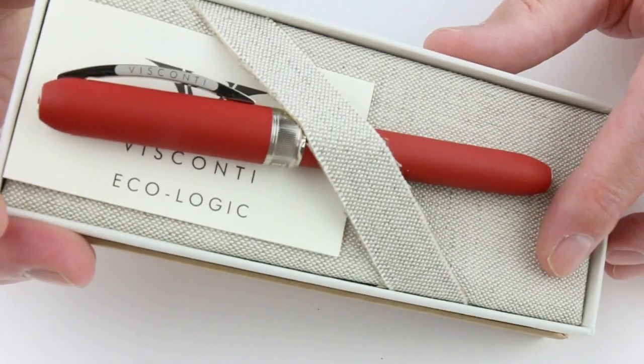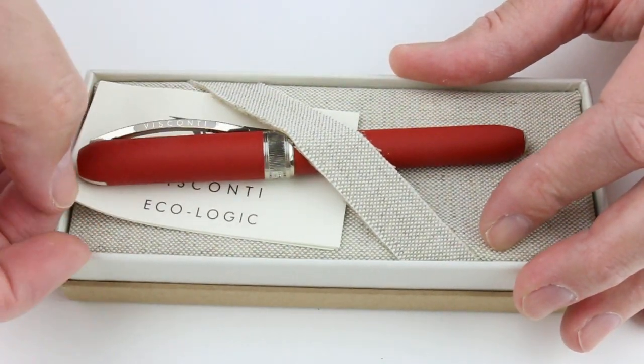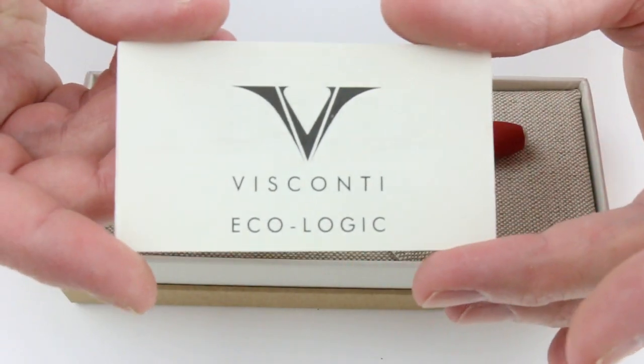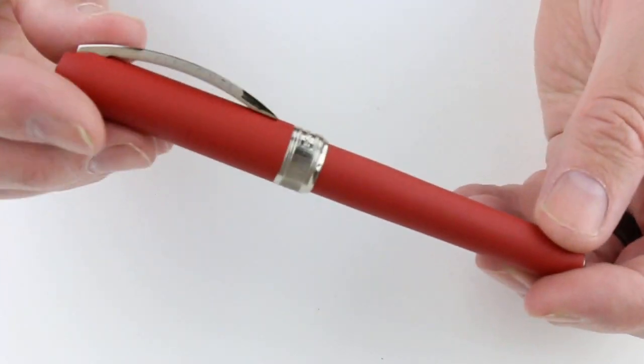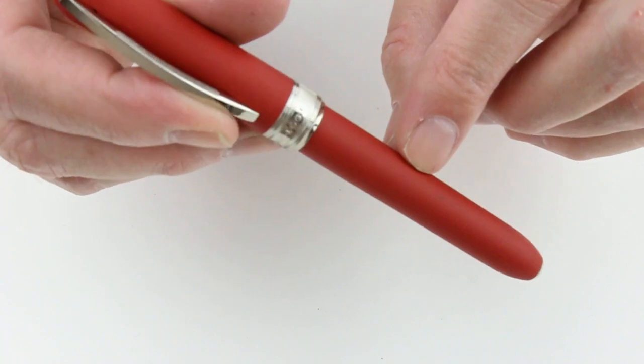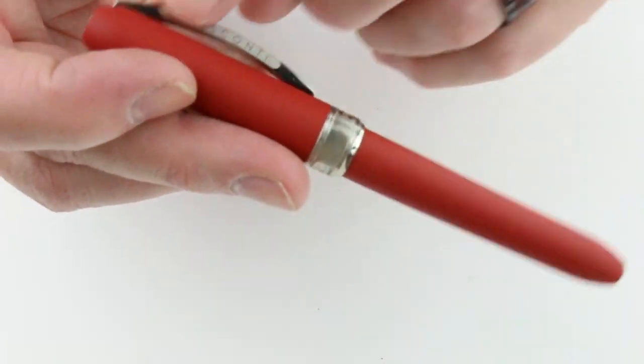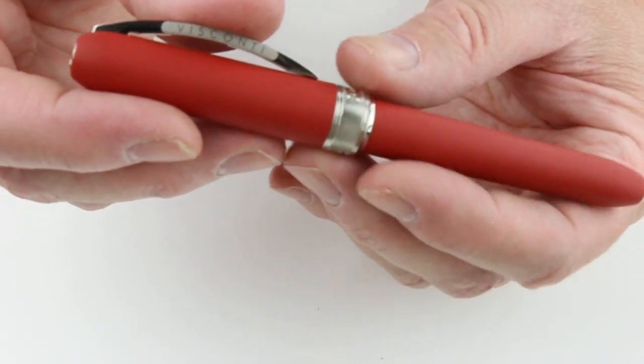The fabric bed which the pen sits on also has this canvas eco-friendly feel to it as well. Included with the pen is a warranty card and of course the Visconti Ecologic fountain pen. These pens have a matte finish on both the cap and the barrel with an eco-friendly material which they're made of with silver trim on the pen.